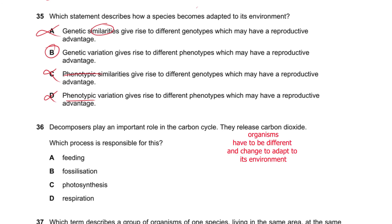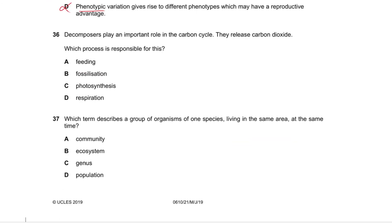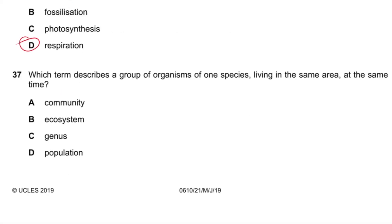Question number 36 says the decomposers play an important role in the carbon cycle. They release carbon dioxide. Which process is responsible for this? Releasing carbon dioxide is respiration. Just like us, they release carbon dioxide too. Question number 37 says which term describes a group of organisms of one species living in the same area? One species is population.